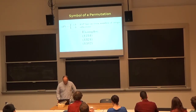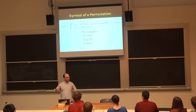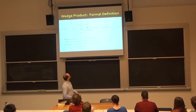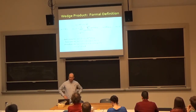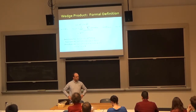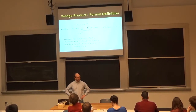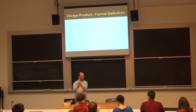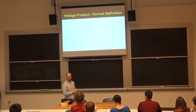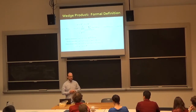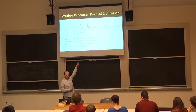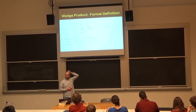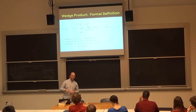We defined the sign of a permutation — negative one to the number of flips to get from one ordering to another. The idea is to multiply a k-form and an l-form to get a k-plus-l form. The problem is the result has to be alternating. If you just multiply the values of two one-forms together, you don't get an alternating function. So the definition involves taking every possible product and putting the sign of the permutation in front, which makes it alternating.